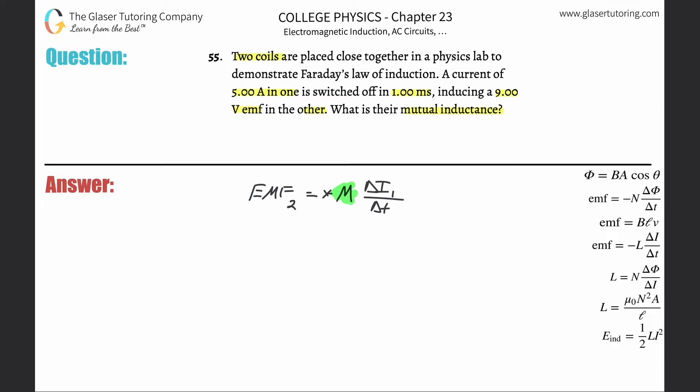So solving this for M, we realize that it's going to be the EMF induced in coil number two multiplied by the change in time all over the change in the current in the first wire. What's the EMF that was induced? It said nine volts. So you plug in the nine. The change in time was one millisecond, but we need that in seconds, so take one times 10 to the minus three, and then divide that by the current, the change in current.